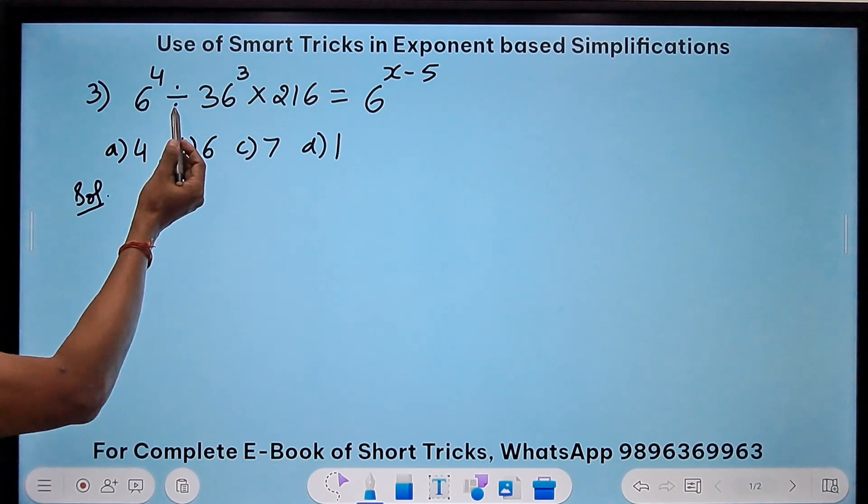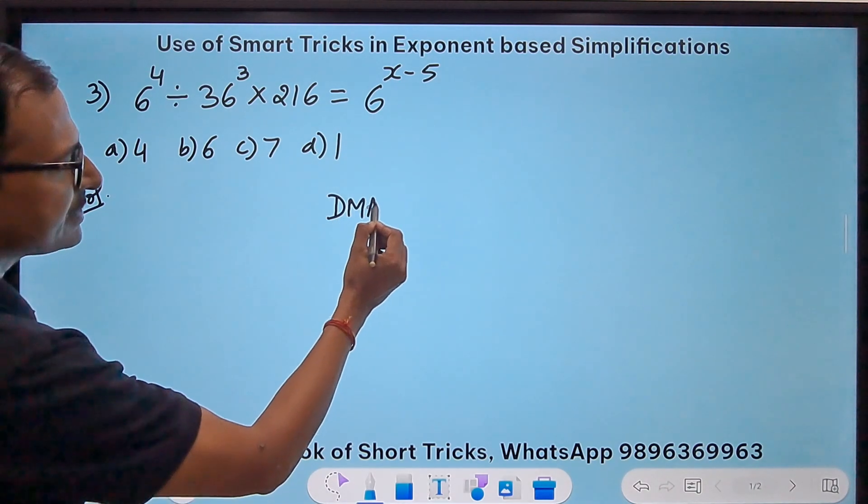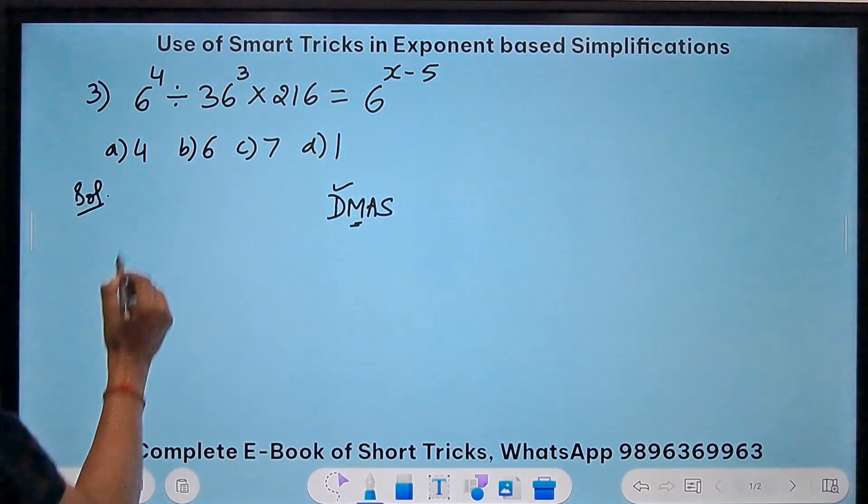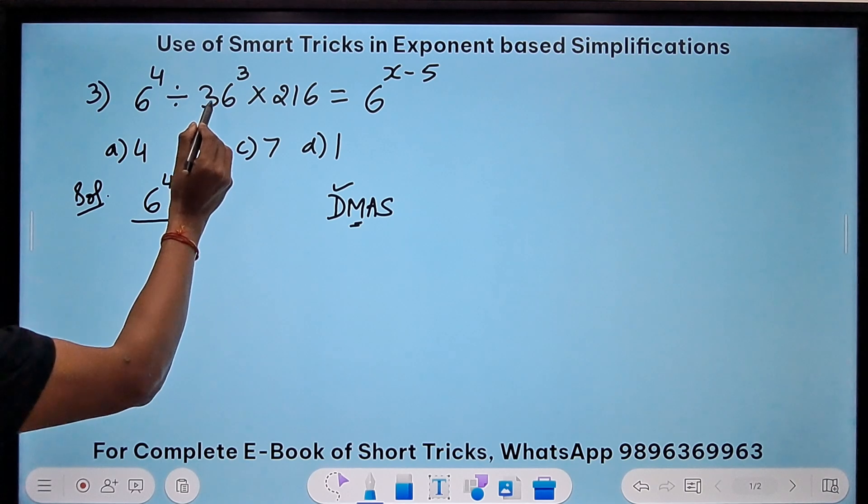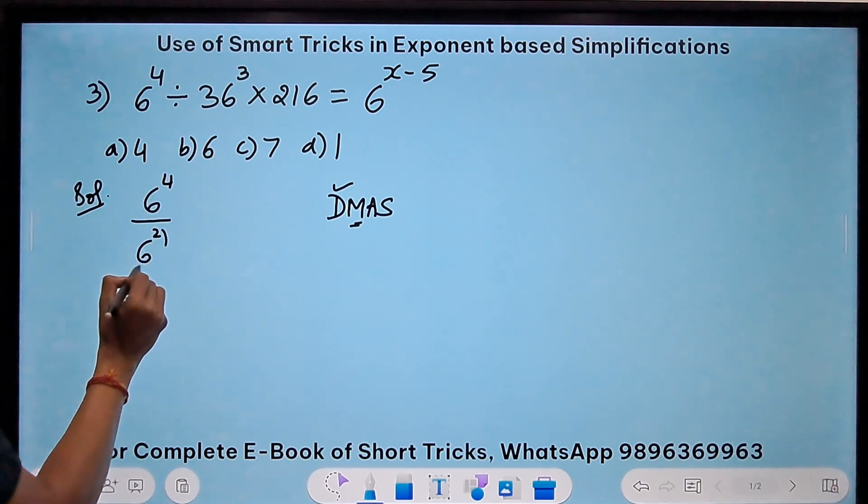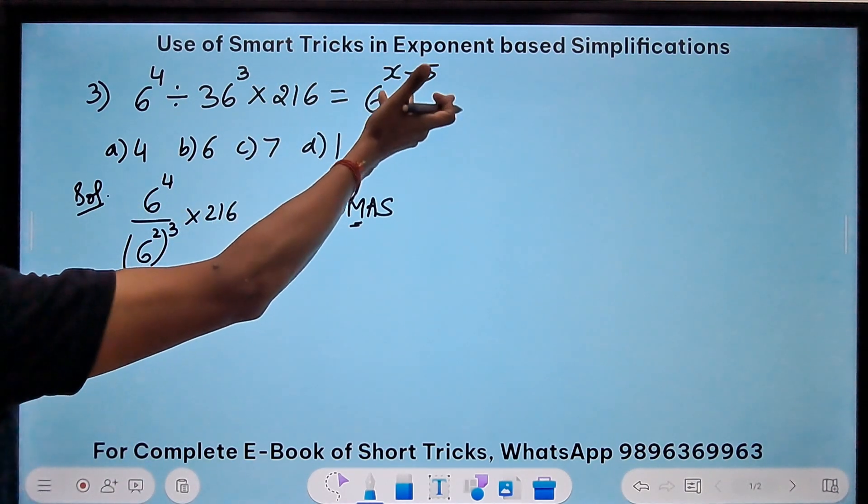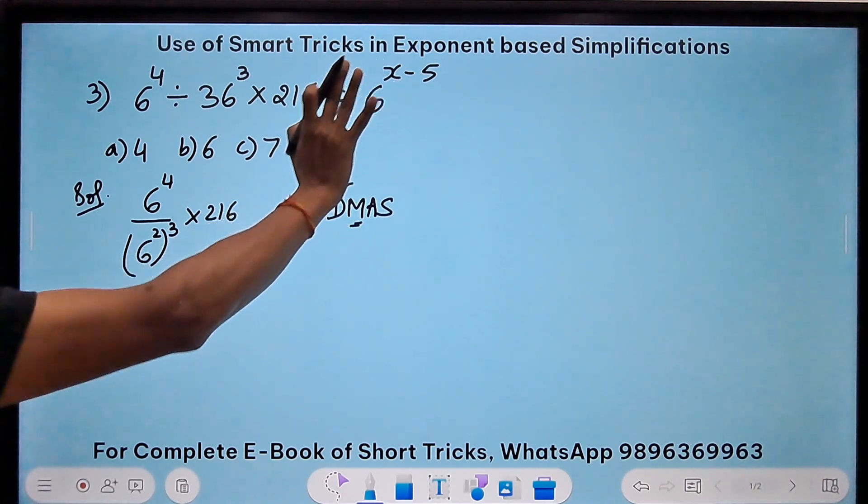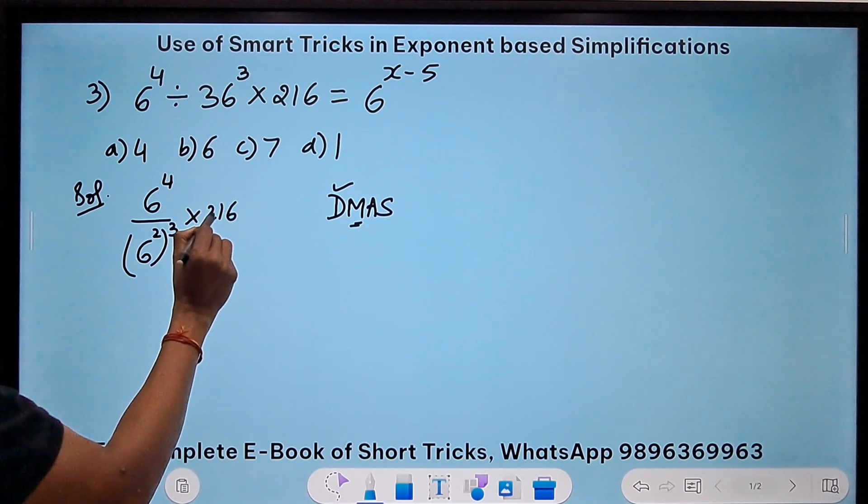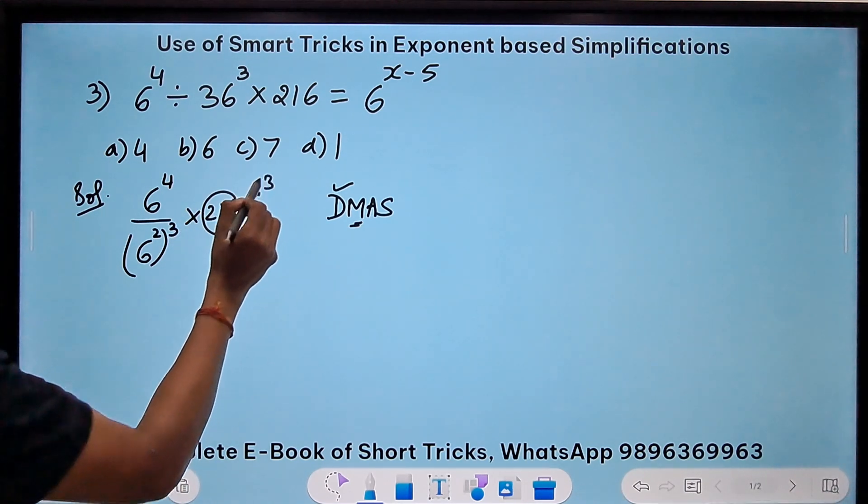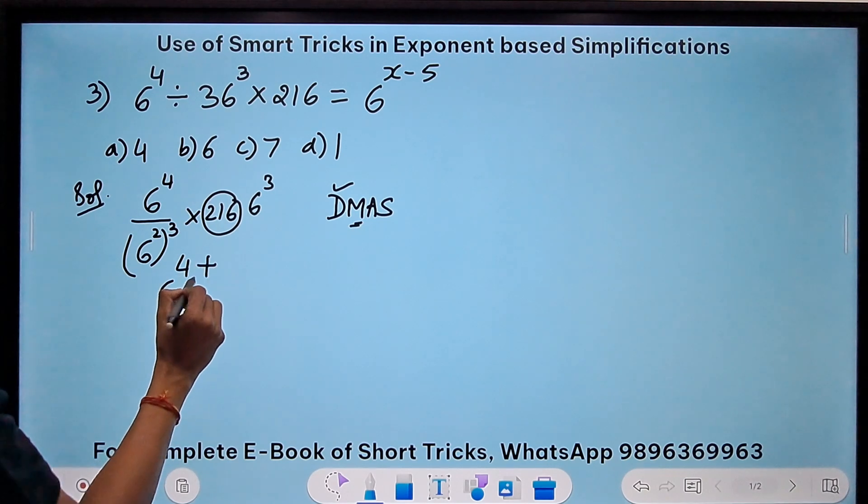Let's see. Again there is a divide here and a multiply here. So I know the sequence of operations: divide, multiply, and subtract. So I have to divide first and then multiply. So the division part, 6^4 divided by 36 is 6². So I will write 6² raised to power 3 and then multiply by 216. This is the left hand side. On the right hand side, I have 6^(x-5). I don't want to touch that as of now. So this 216 again is 6^3. So I can write it as 6^3.